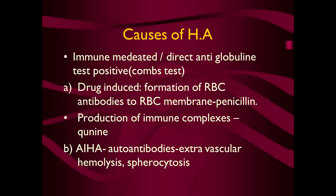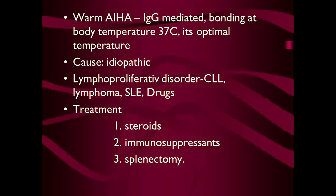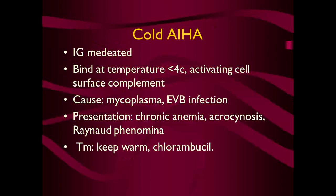The cells may assume the shape of spherocytes. The types of autoimmune hemolytic anemia are warm autoimmune hemolytic anemia, which is usually IgG mediated. There is bonding of the IgG immunoglobulins at body temperature 37 degrees centigrade, which is the optimal temperature for binding to the cell surface. Mostly they are idiopathic, but other causes include lymphoproliferative disorders such as CLL, lymphoma, SLE, and drugs.